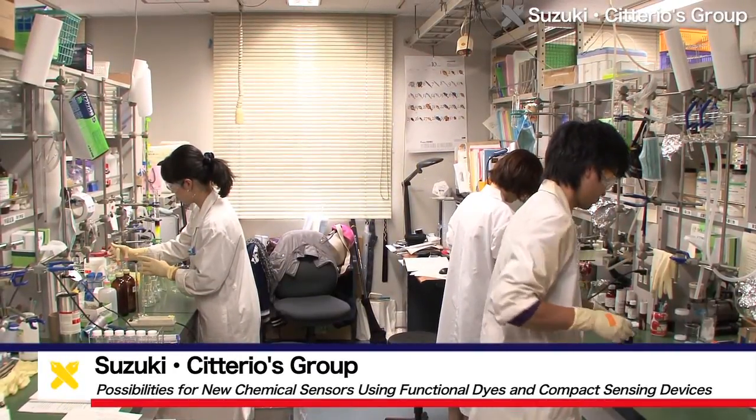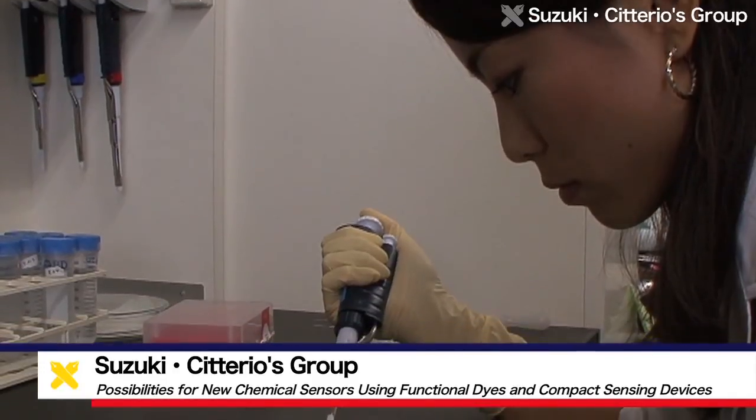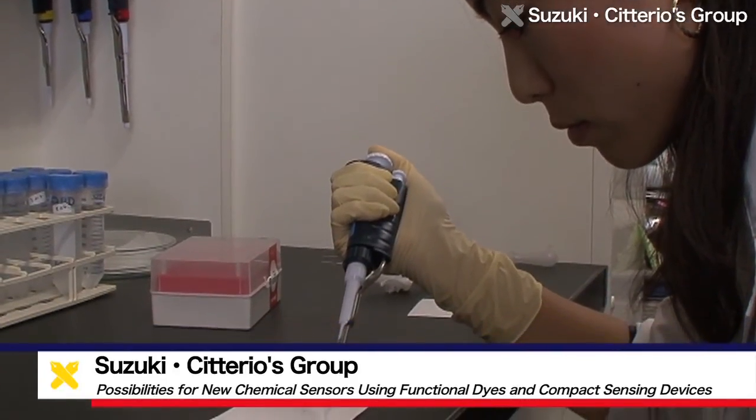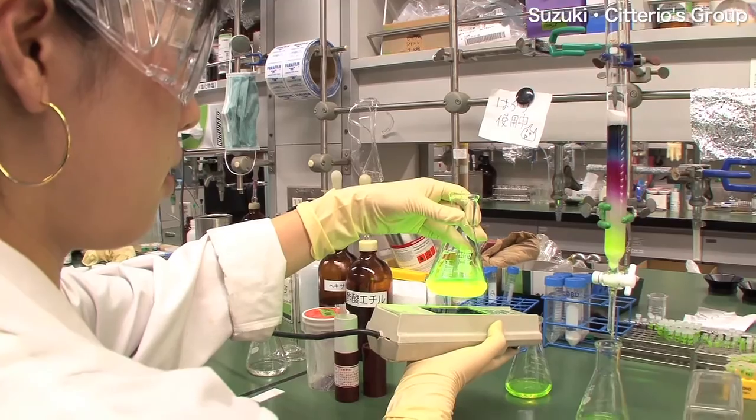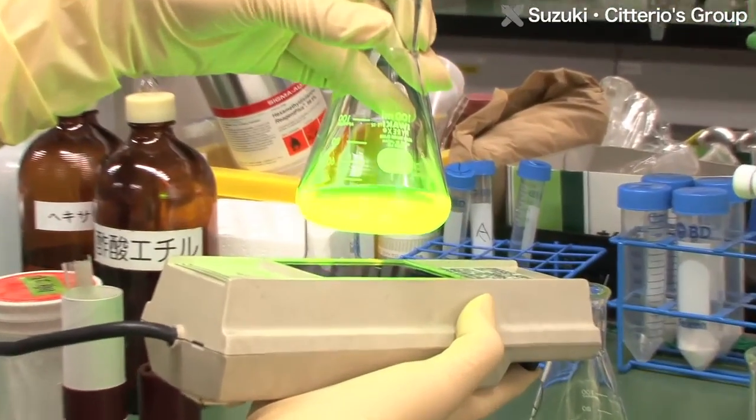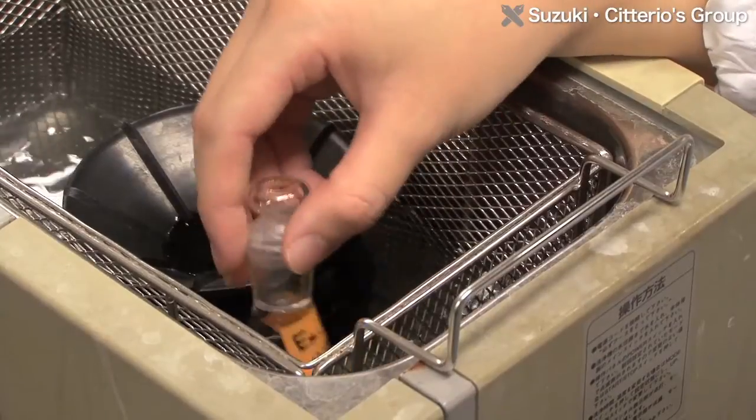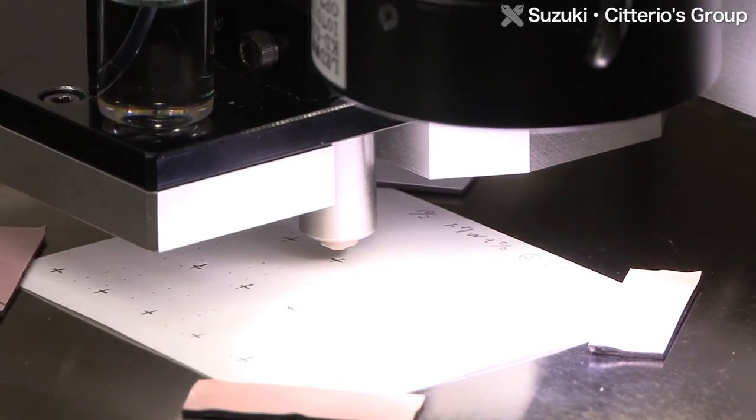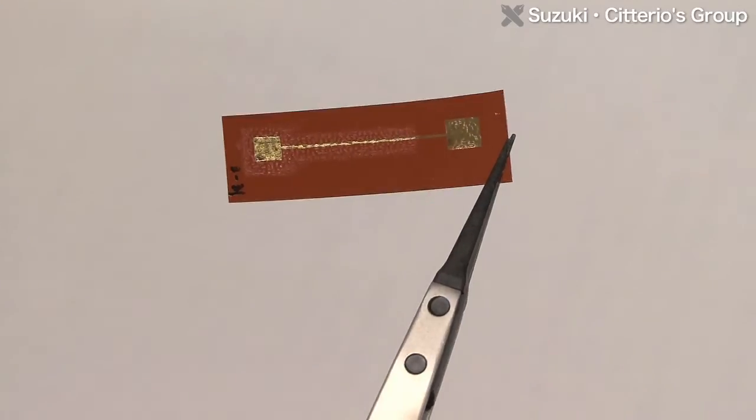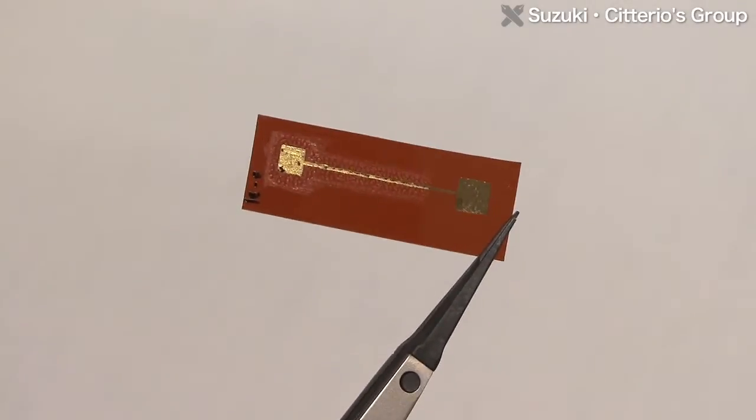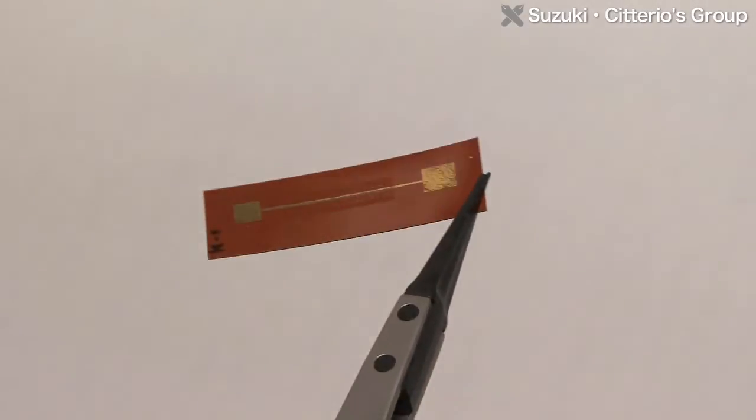The Suzuki and Jeterio Lab is working to create new sensing materials such as dyes and to develop chemical sensors. By combining organic molecules, electrochemistry and molecular biology, the aim is to create chemical sensors that are smaller, simpler and more sensitive. Such sensors will have a wide range of practical applications.